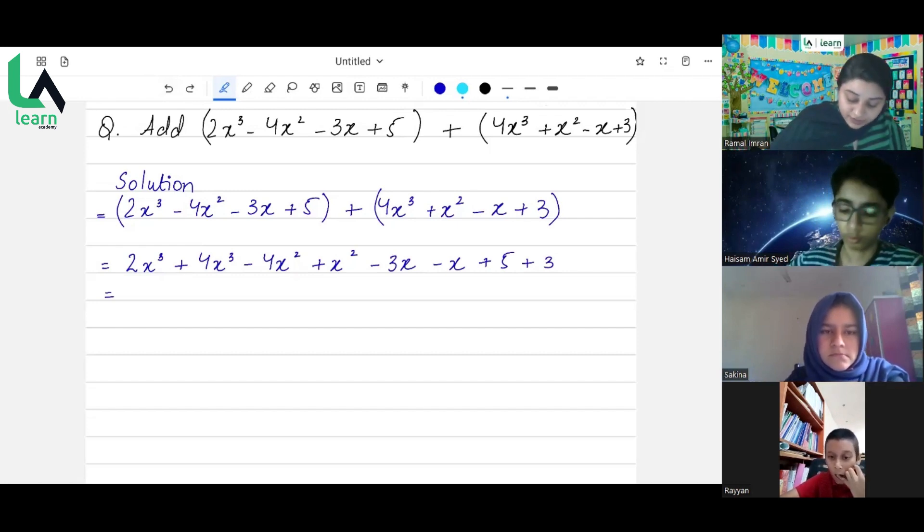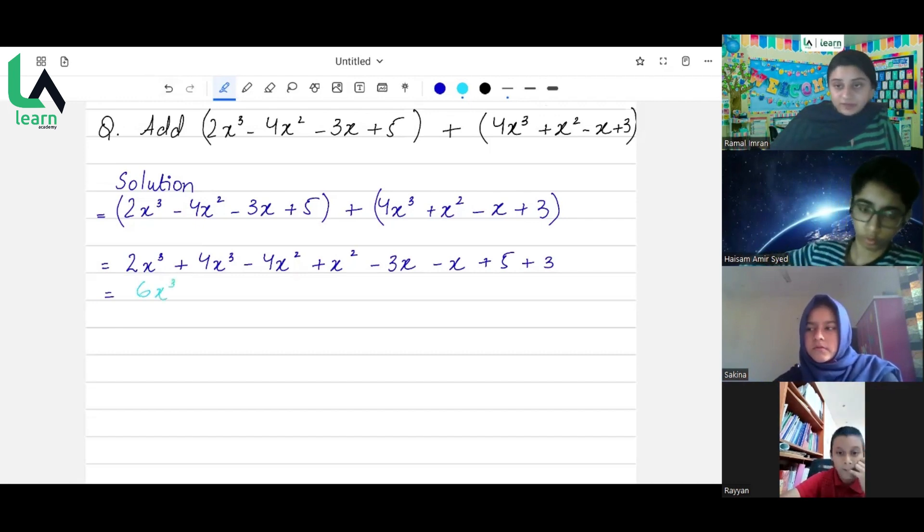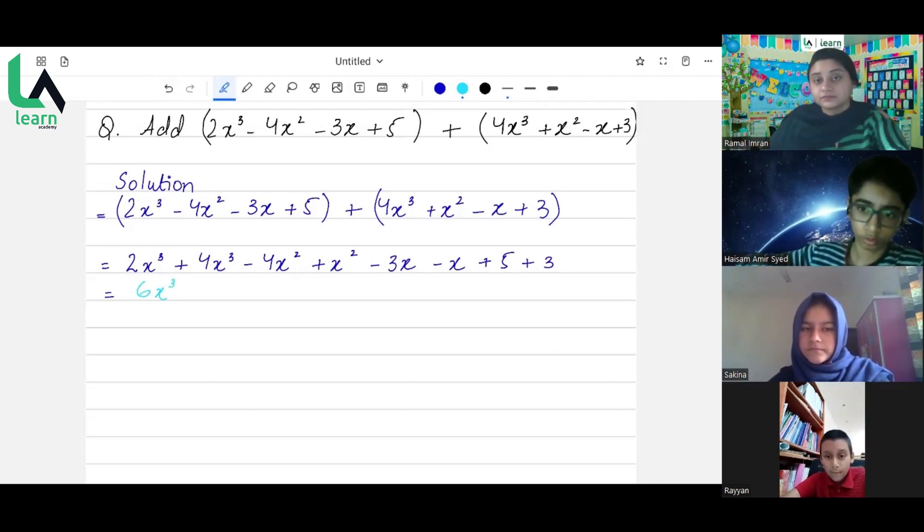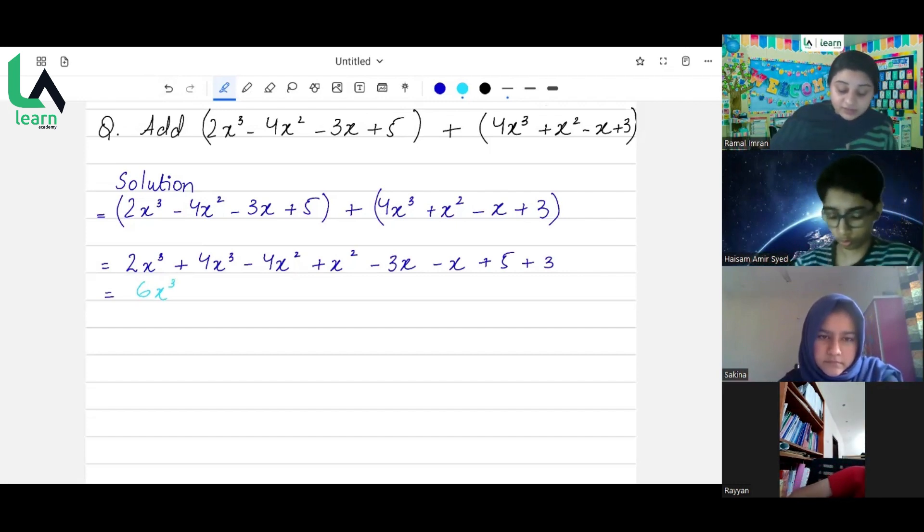So 4 plus 2 is 6x cube. x cube will remain the same obviously, we will just add the coefficients. We always just add the coefficients, we never add the powers. Now what's next? What will be the sign? The sign will be plus because both of them have plus sign.